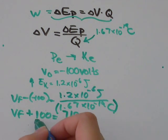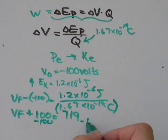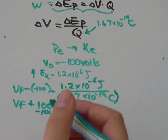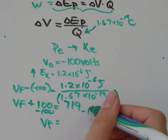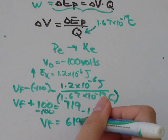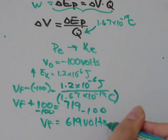Then all you need to do is subtract that 100 from both sides. And you should get that the final voltage is equal to 719 minus 100, which is 619 volts.